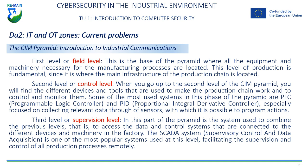Third level, or supervision level. In this part of the pyramid there is the system used to combine the previous levels — that is, to access the data and control systems connected to the different devices and machinery in the factory. The SCADA (Supervisory Control and Data Acquisition System) is one of the most popular systems used at this level, facilitating the supervision and control of all production processes remotely.